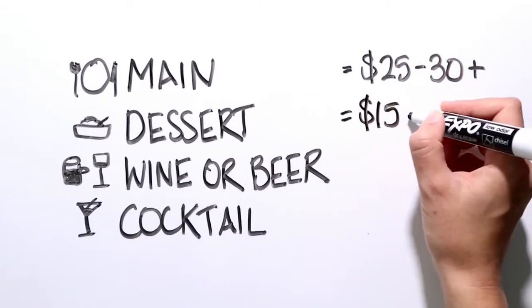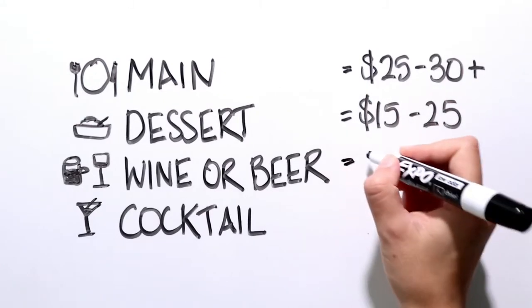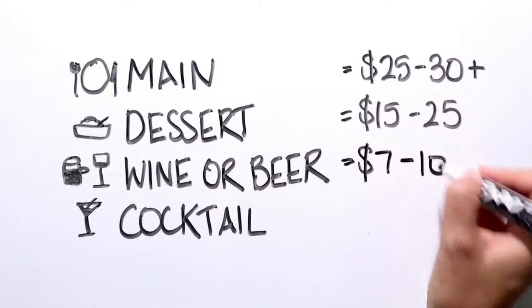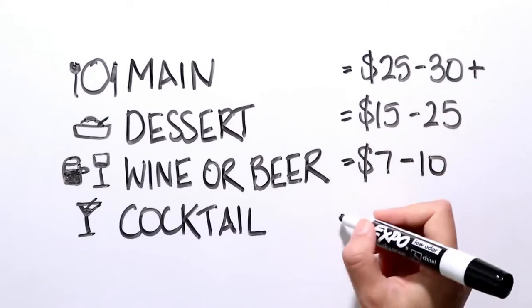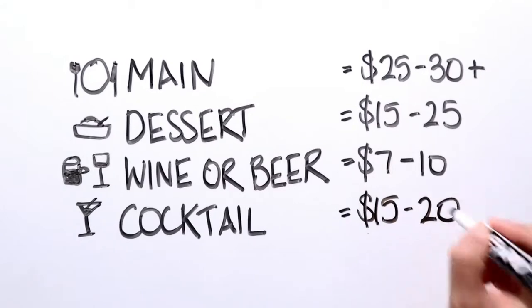Dessert is around $15.00 to $25.00 and a beer or glass of wine from $7.00 to $10.00. And unless it's happy hour, expect to pay between $15.00 to $20.00 each for cocktails.